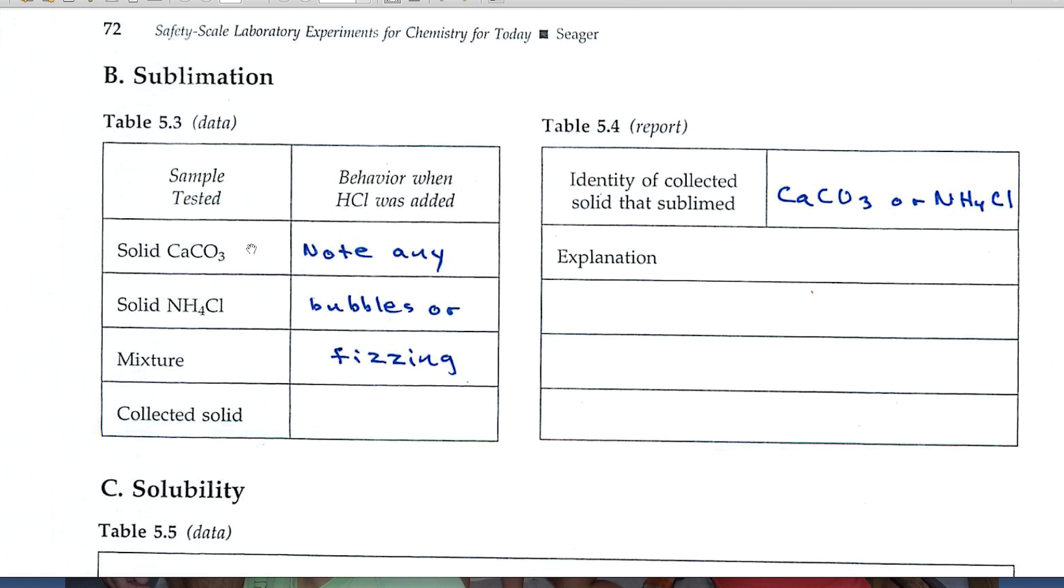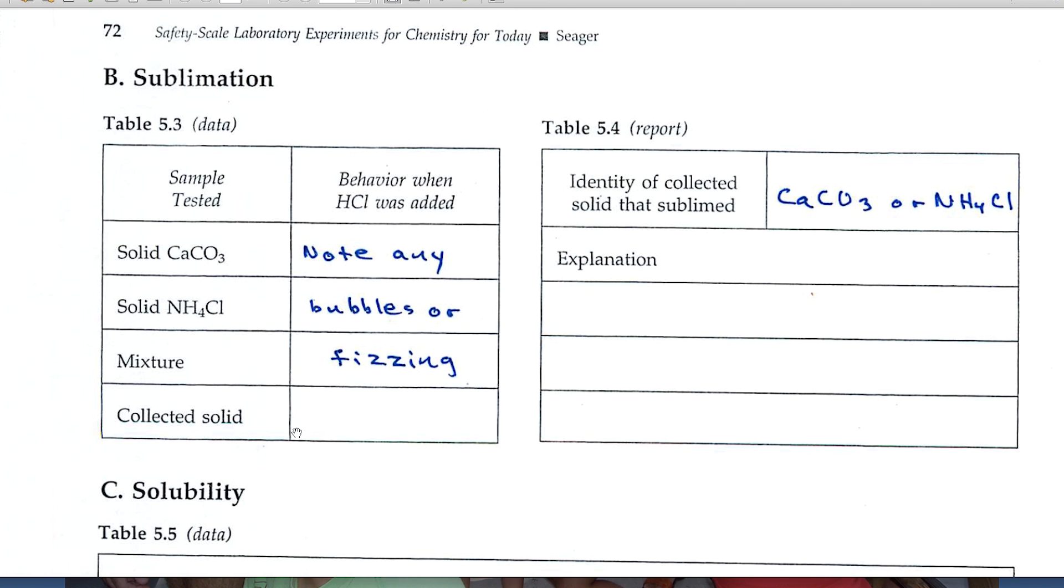I'll test the calcium carbonate that way, the ammonium chloride, and record if any bubbles or fizzing occur. The mixture, well, up here one of these two is going to give some bubbles, so the mixture should give some fizzing or bubbles also. And the collected solid, the big question is does it give fizzing and bubbles or not? Which of these two is it like?